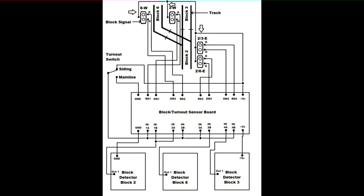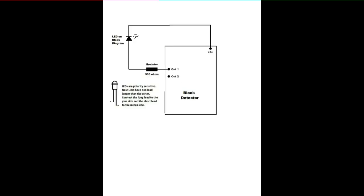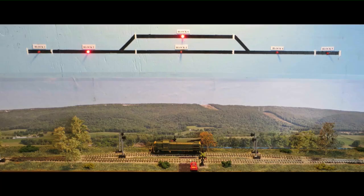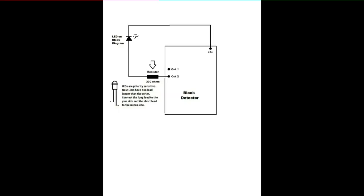These block detector boards have two extra outputs on the left side. This block diagram shows how I used the outer output, output 2, to light an LED on my block diagram of the layout shown on the skyline. I needed to install a 330 ohm series resistor between the output and LED.